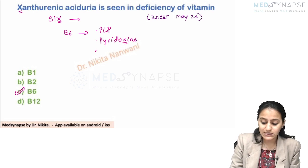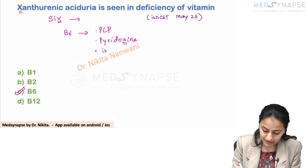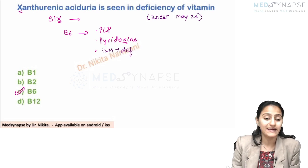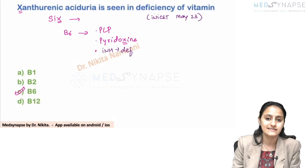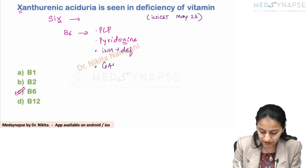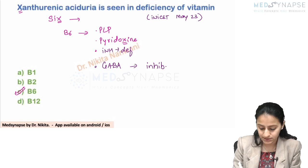What are the other important points for B6 that you should know? This vitamin deficiency is what you see with INH — a patient on isoniazid will have B6 deficiency, so we need to supplement B6. B6 is also very important for GABA synthesis, which is an inhibitory neurotransmitter.